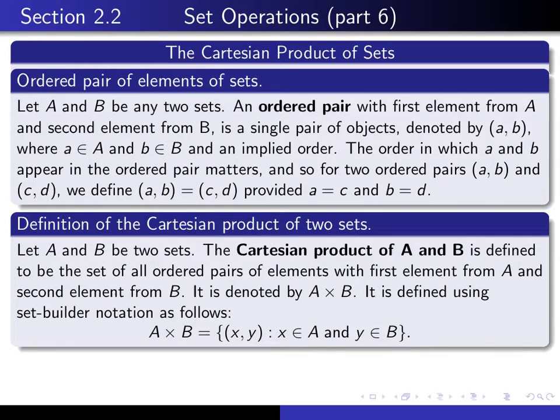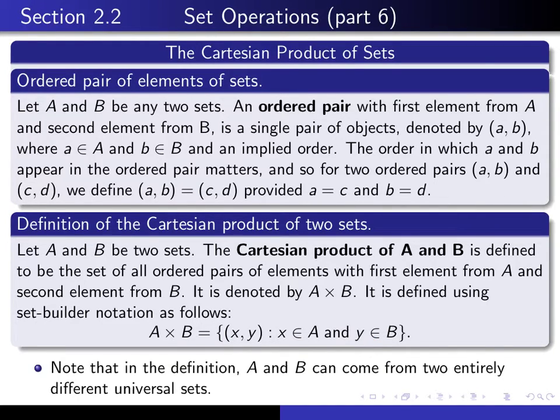Now we're ready to define what we mean by the Cartesian product of two sets. If A and B are any two sets, we define the Cartesian product of A with B to be the following. It's defined here using set builder notation. It's the set of all ordered pairs (x, y) such that x is an element of A and y is an element of B. It's often the case that A and B are taken from the same set, but that doesn't have to be the case. A and B could be two entirely different kinds of sets, and we can still form their Cartesian product.